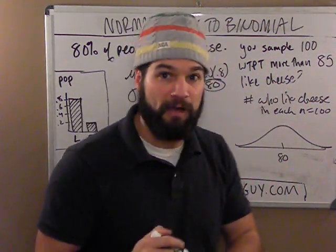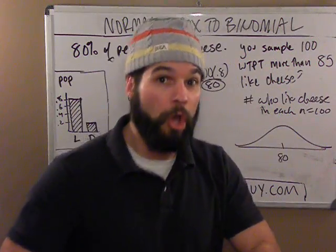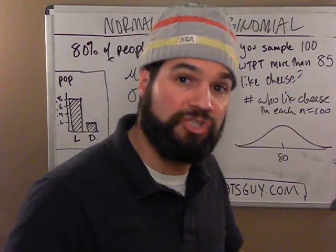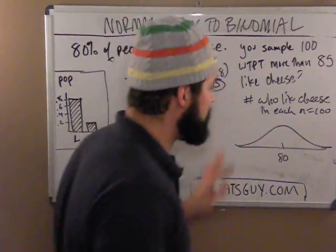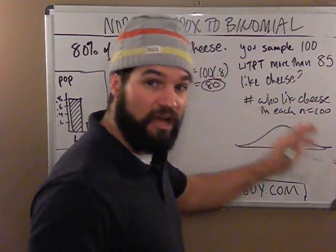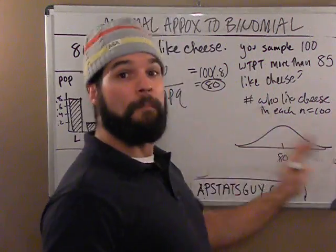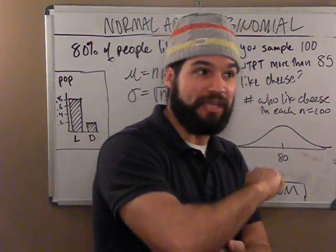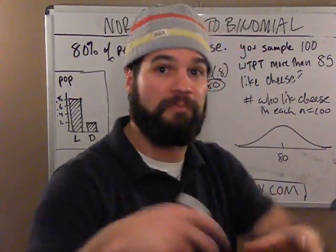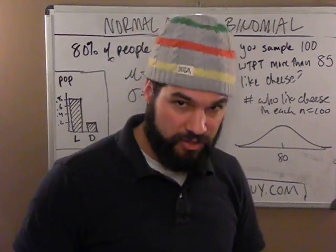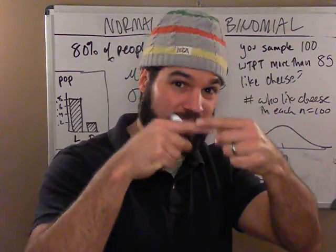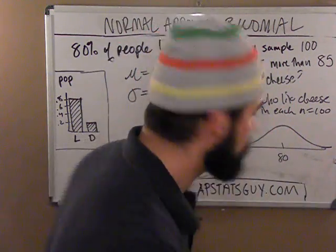Remember, the last model we had was 0.8, or 80% — that was a bunch of p-hats, a calculation of a bunch of percents of people that like cheese. This model is talking about the number of people that like cheese, and I'm going to show you the connection between those two things in a minute.